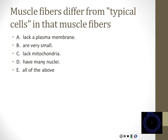Muscle fibers differ from typical cells in that they have many nuclei — that's the correct answer D. Half of you put E, 'all of the above.' Do muscle fibers lack a plasma membrane? No. Are they very small? No, they're very big. Do they lack mitochondria? No — muscles have lots of mitochondria. So don't get fooled by 'all of the above' — they're often correct, but they are not always correct.